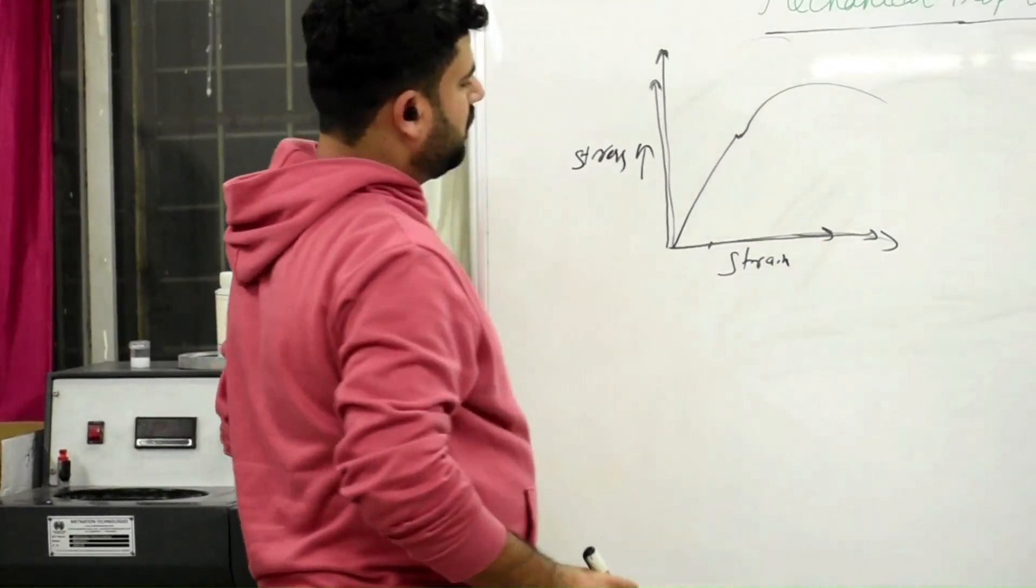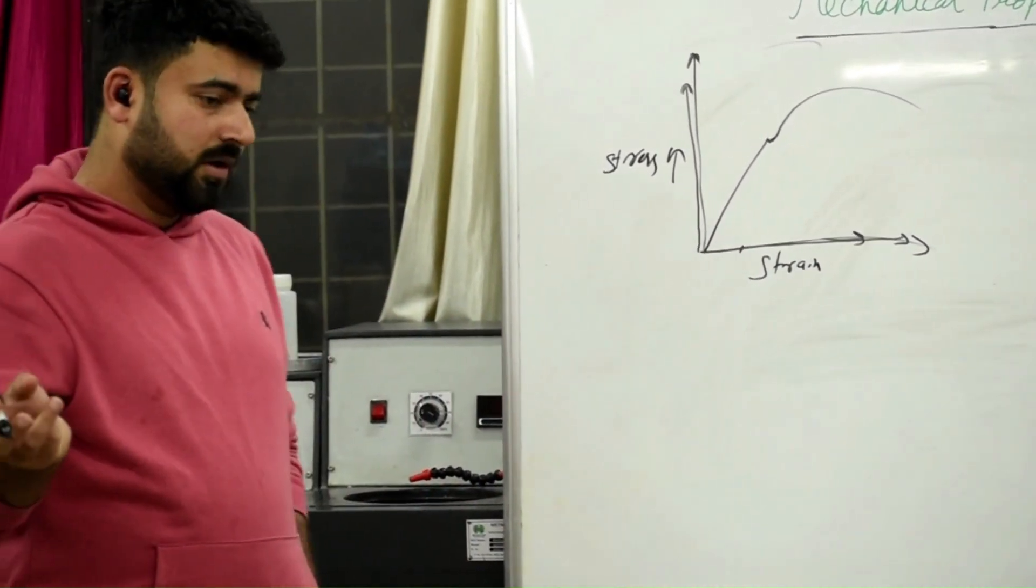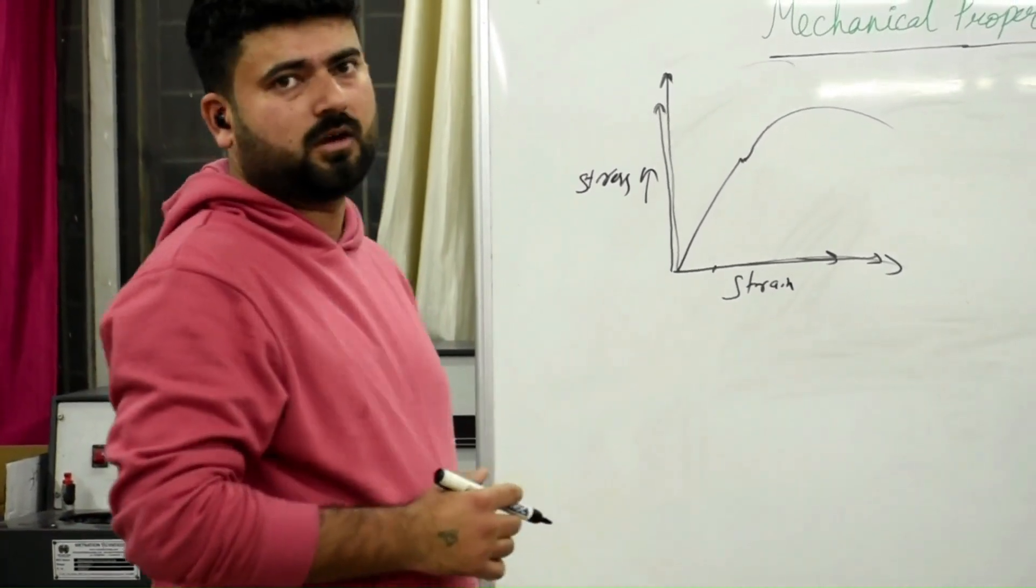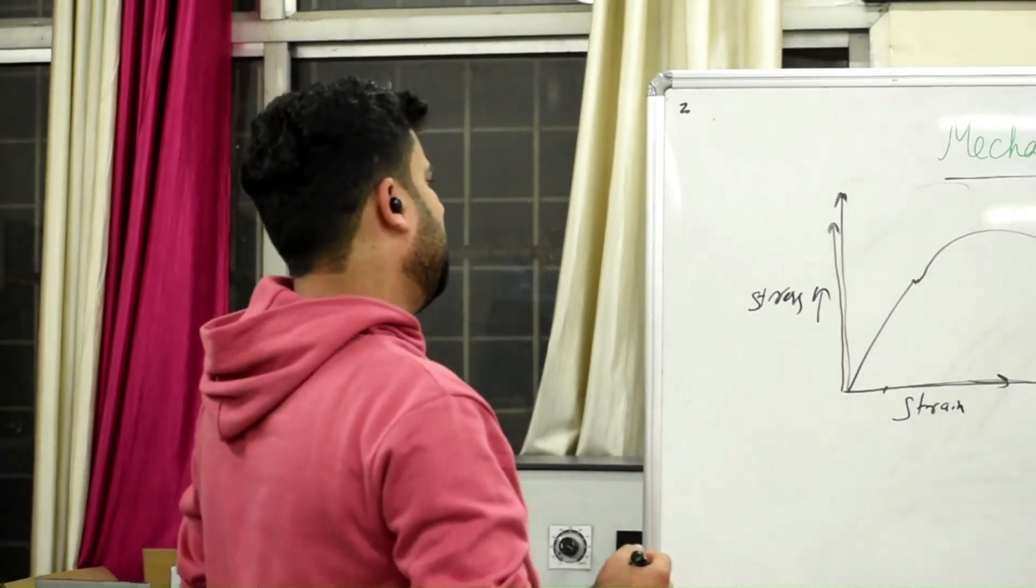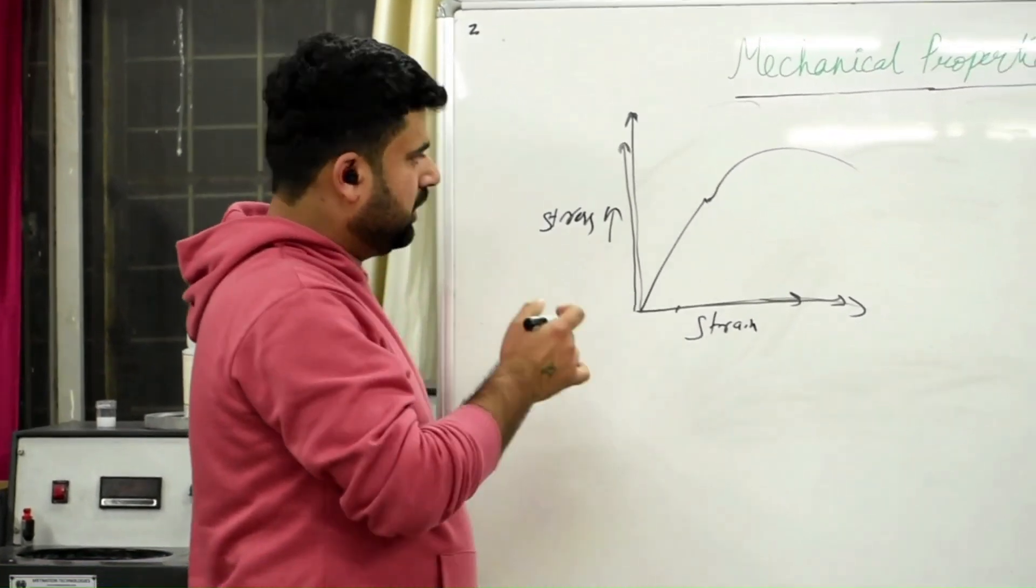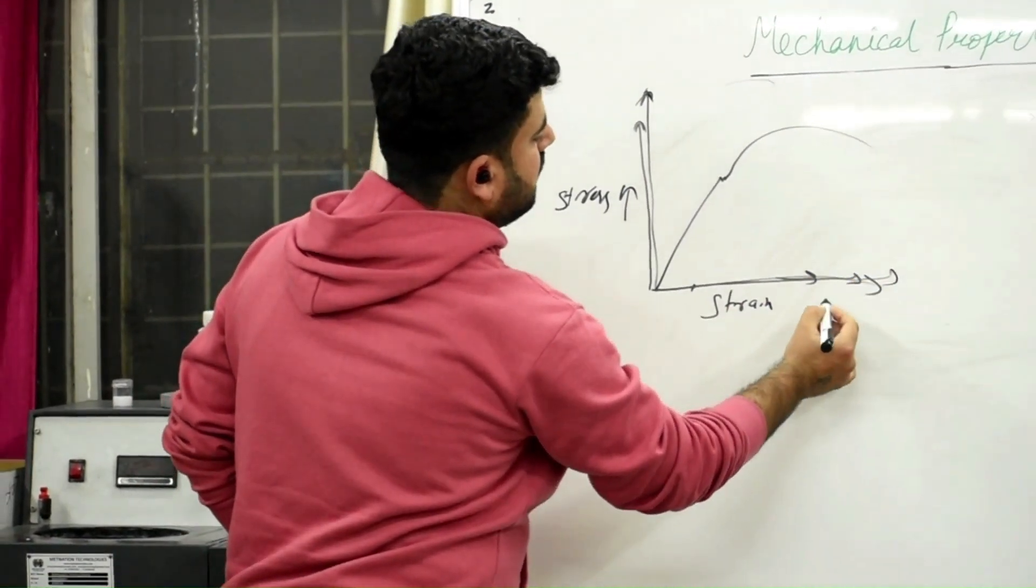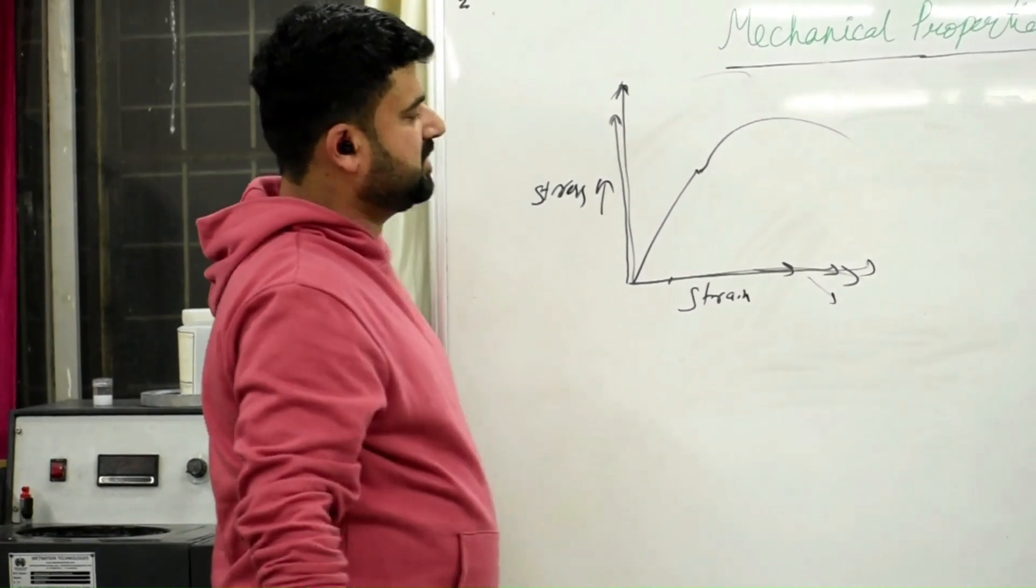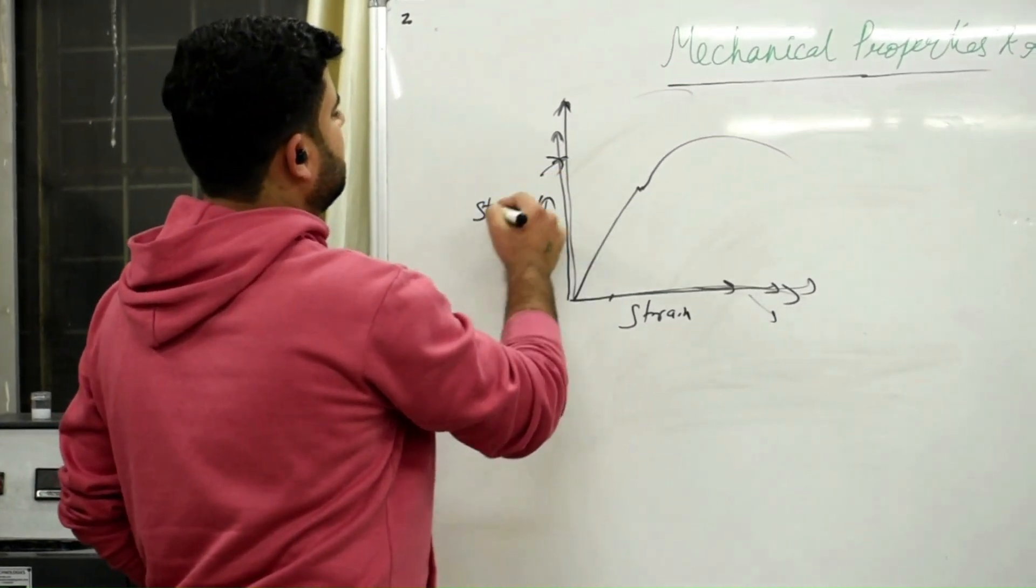Higher Ductility is required because there will not be a sudden failure of the material. From here we came to know what is the Ductility. This curve is giving the Ductility. This is giving us the Strength.